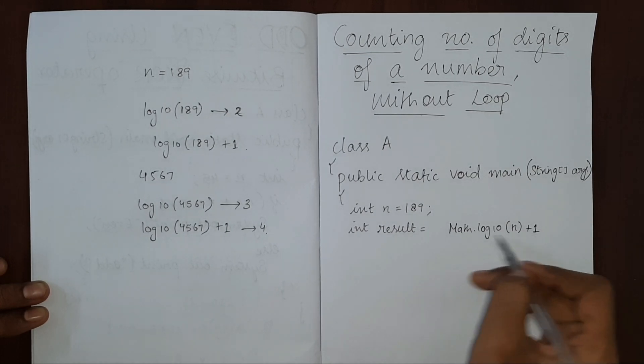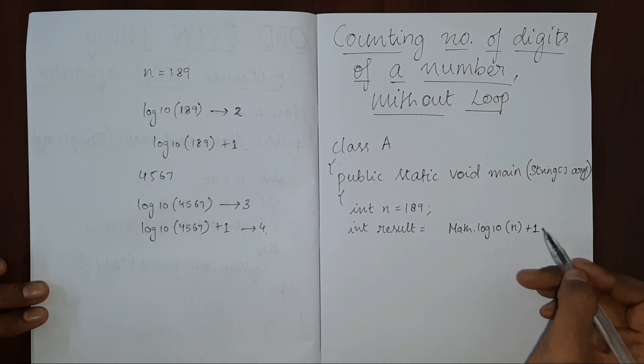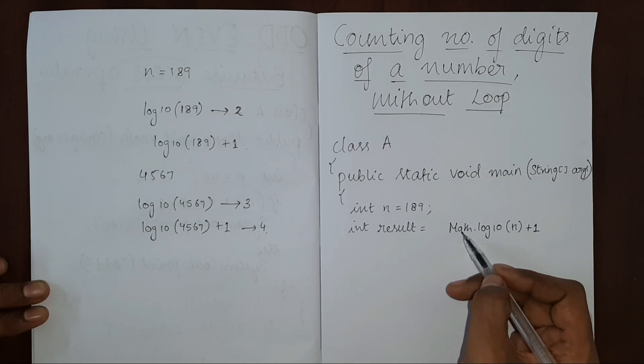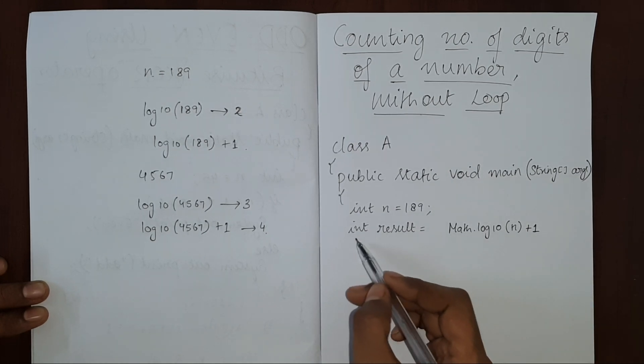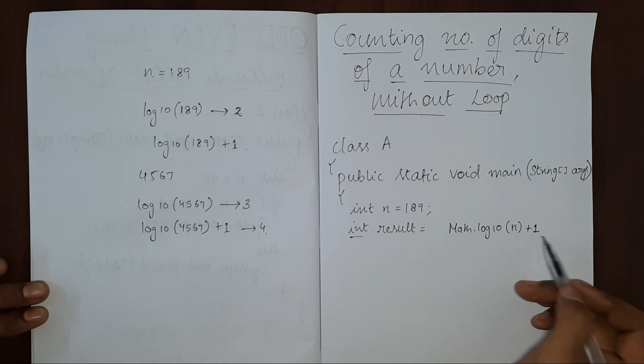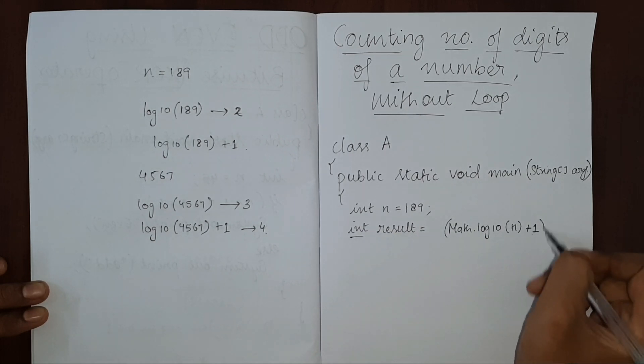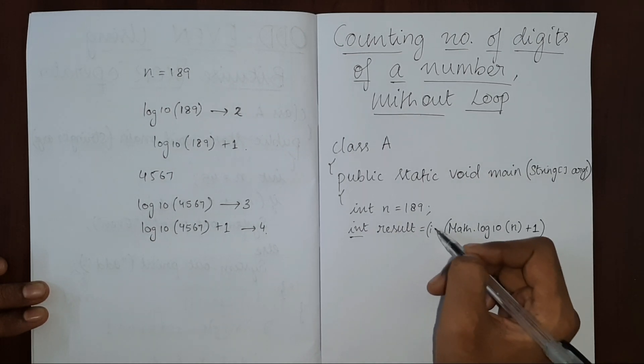Now this will result in a value which is double. So it will give a lossy conversion because this is integer and this will return a double. So all we have to do is convert it into int.